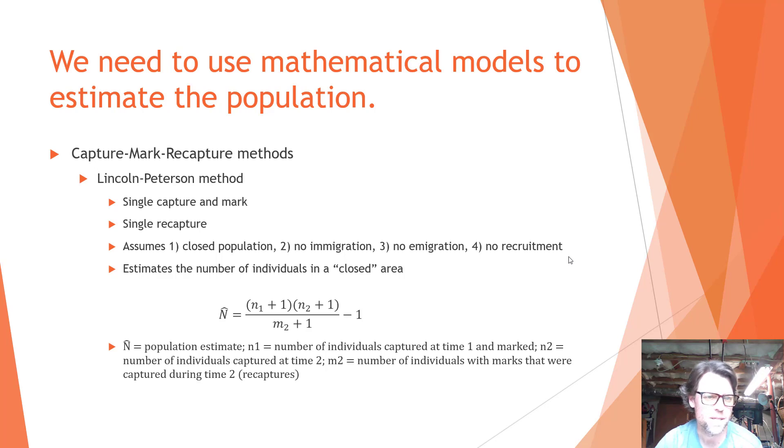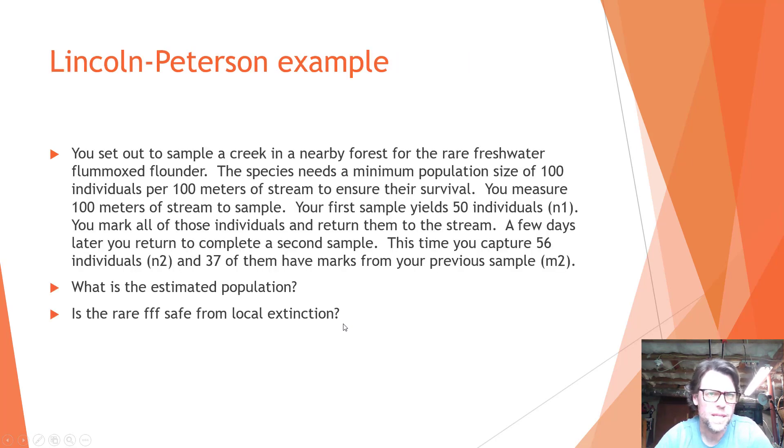The estimate, in order to estimate the number of individuals in a closed area, this is the equation that you see on the screen here. And it is n hat, which is the estimate of the population, is equal to n1, which is the number of individuals captured at time one and marked, plus one. So that's n1 plus one. Then n2 plus one, where n2 is the number of individuals captured at time two. These individuals are not marked, they're just captured. Divided by m2, which is the number of individuals that are recaptured, or they're captured and they have marks. So they're captured at time one and marked. And so these are recaptures plus one. So m2 plus one. And then all of this, this fraction, minus one.